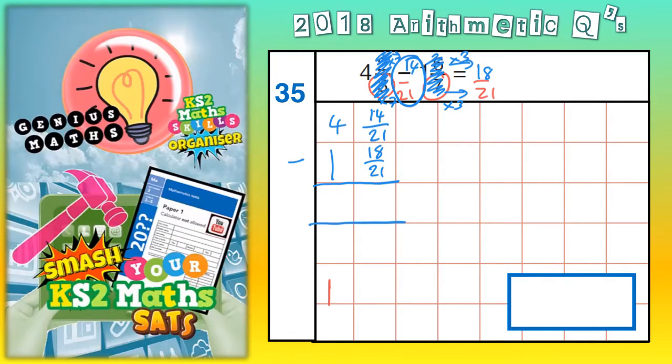A whole one is also 4 quarters. A whole one is also 3 thirds. A whole one is also 21 21ths. A whole one is 15 15ths.